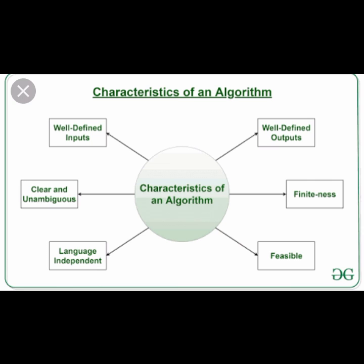The characteristics of an algorithm are: well-defined inputs, clear and unambiguous, language independent, well-defined outputs, finiteness, and feasible. So students, these were the characteristics of an algorithm.